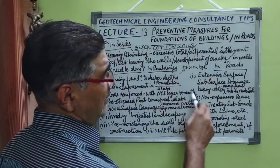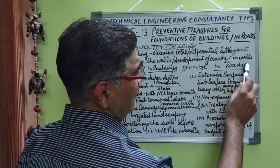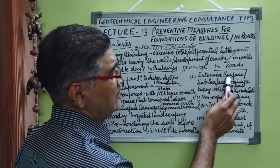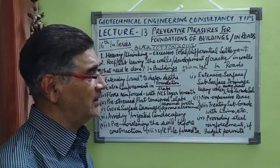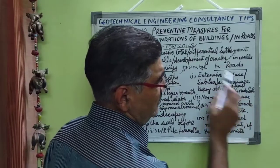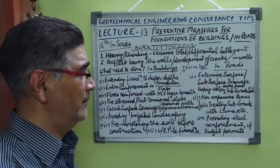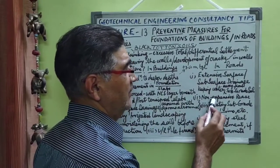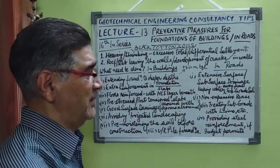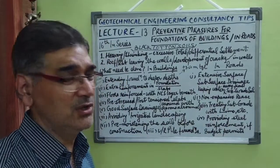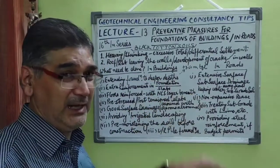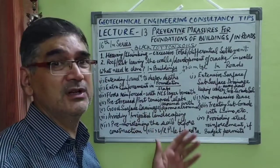Coming over to the remedial measures for the construction of roads in such conditions: you need to go in for extensive surface and subsurface drainage methods during road construction, in order to keep water away from the subgrade level. You also need to provide a non-expansive base beneath these kinds of roads so that swelling and shrinkage properties are equally counteracted, making your roads safe.